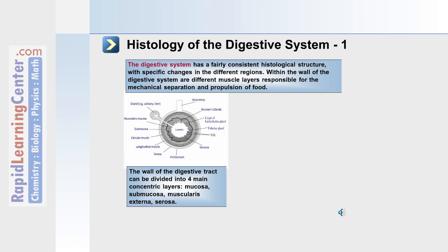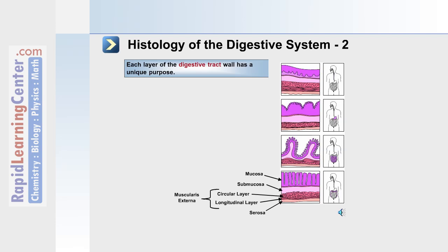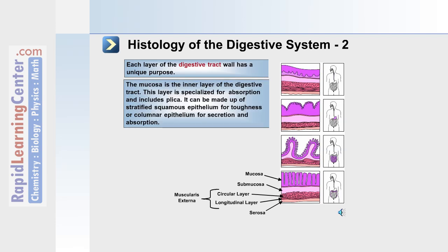The four layers are: mucosa, submucosa, the muscularis externa, and the serosa. Within the mucosa are folds known as plica, which increase the surface area for absorption. The mucosa is the inner layer of the digestive tract, specialized for absorption, and includes plica as mentioned.